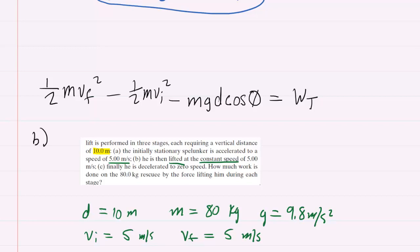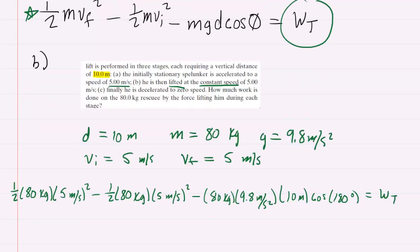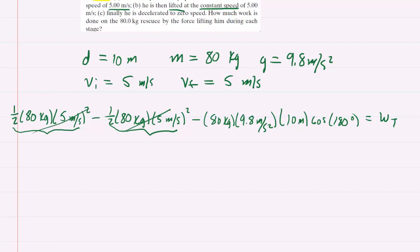So we're going to plug in all those values into this equation to get the work done by tension. So all of the known values are plugged in. You might notice that these two quantities are identical so when you subtract them they're going to go out to zero. But if you punch this into your calculator you're going to get a value of 7,840 joules. And this would be the work done by the tension force in part B.